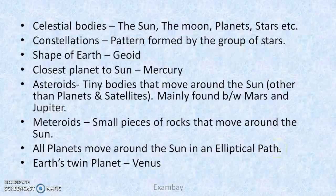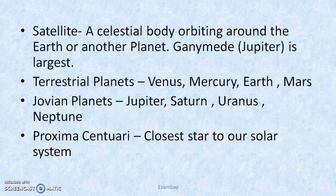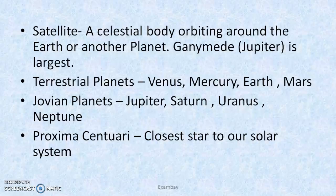All planets follow elliptical paths, not circular paths. Earth's twin planet is Venus. Satellites are celestial bodies orbiting around the Earth or another planet. Earth has only one natural satellite which is the Moon. The largest satellite in the solar system is Ganymede, which is Jupiter's satellite. Artificial satellites are used for telecommunication, security, navigation and many other things.